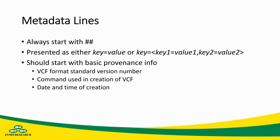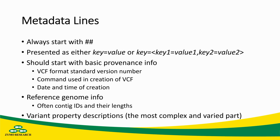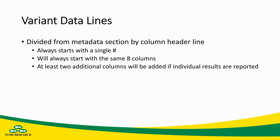The first few lines should describe some basic provenance info about the file, including things like the version number of the VCF standard used, the command used in the creation of the file, and the date and time of the file's creation. Following that, there will often be information on the reference genome, specifically showing which different chromosomes or contigs were present and what their lengths were. Finally, there will be variant property descriptions, and this will be the most complex and varied part. After this, there will be variant data lines, divided from the metadata section by a single line of column headers.